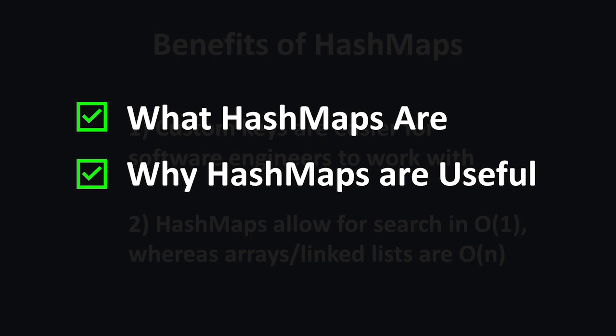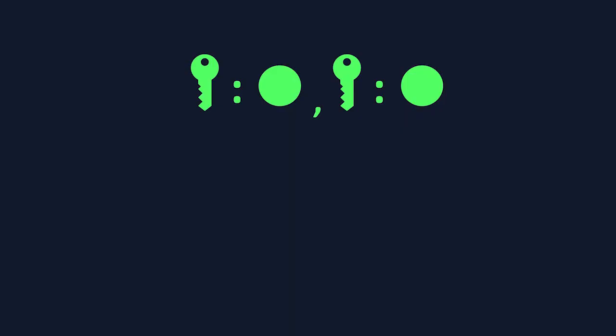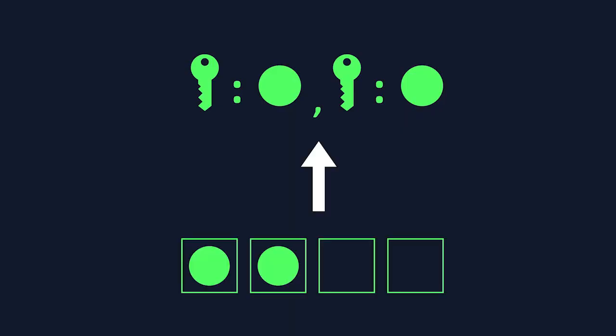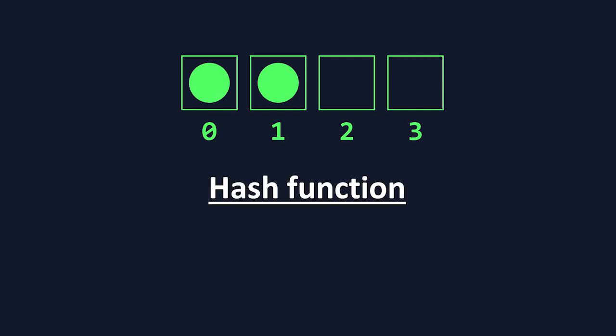Let's dig a little deeper and understand how HashMaps actually work. HashMaps are commonly built off of a predefined data structure like an array. Like HashMaps, arrays do also have keys that store values. For arrays, though, the key is a preset number called an index, which starts at zero. A HashMap is created from an array through the use of a hash function, which takes in a custom piece of data that we want to assign to a key, like a country from our earlier example, and maps this data to an index on the array.